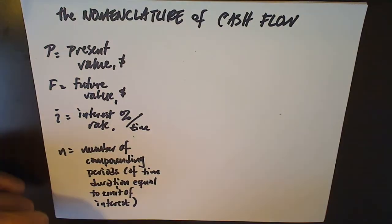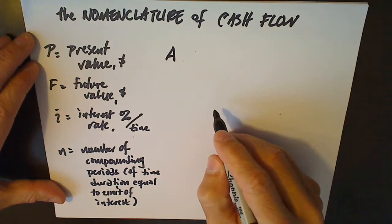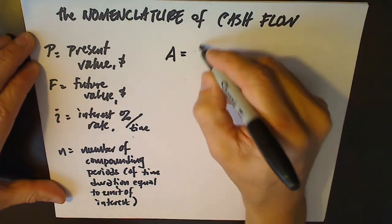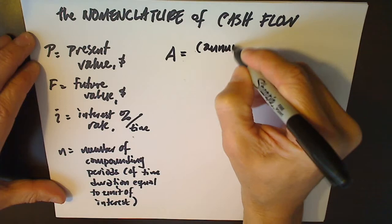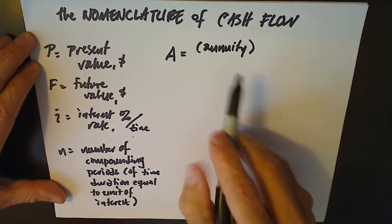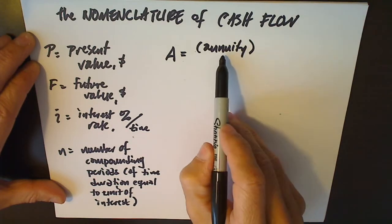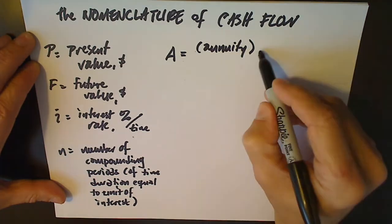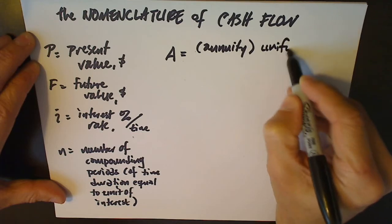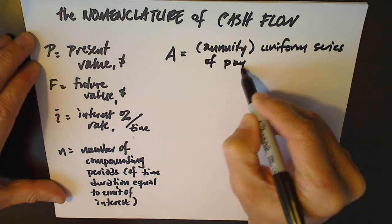In this video, we're going to introduce a slightly more complicated variable called A. The way that I remember A is that it stands for annuity, but that's not technically correct because annuity comes from the word annual, meaning every year. And A is actually any uniform series of payments.